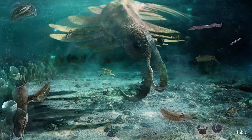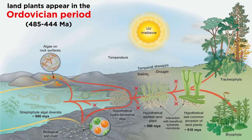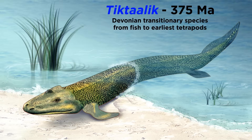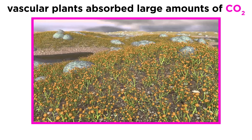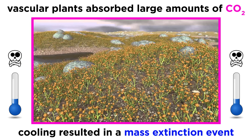Life began in the oceans, and by the early Phanerozoic was beginning to invade the barren lands, pioneered by the first vascular plants, which were later followed by lungfish and other creatures looking for new food sources. The colonization of land by vascular plants had a large impact on the climate by absorbing CO2 from the atmosphere, which cooled the earth so much that it caused a mass extinction event.